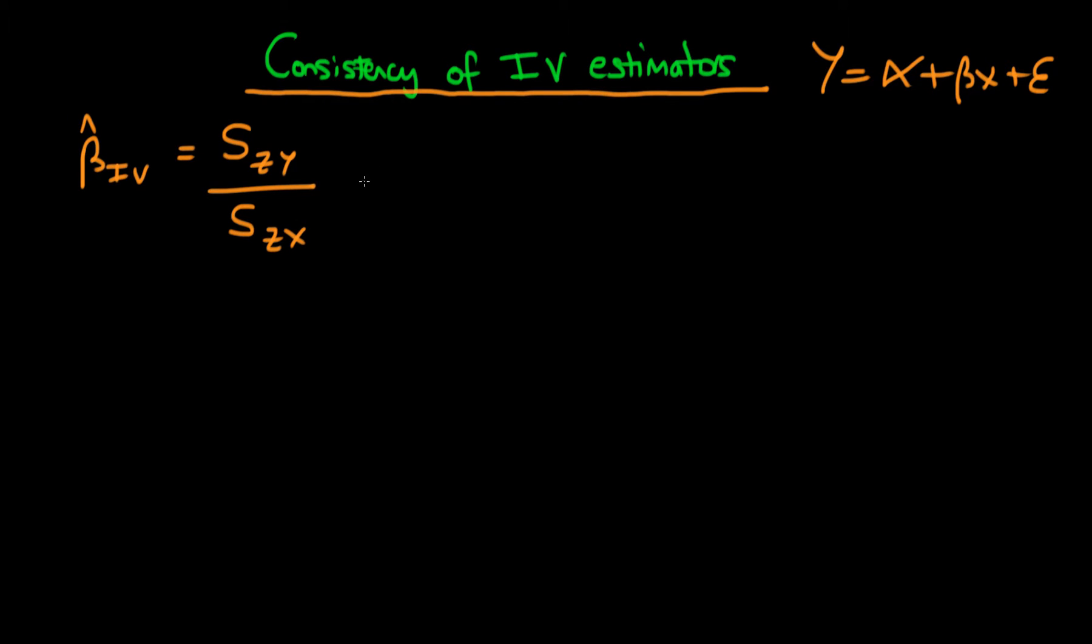When we're talking about consistency, what we're meaning is how does our estimator behave as N tends to infinity? Or strictly, how does the expected value of our estimator behave as N tends to infinity? When we talk about N tending to infinity, we write the probability limit of beta hat IV. And when we actually have the entirety of the population's data, which is when we have N as being infinite,